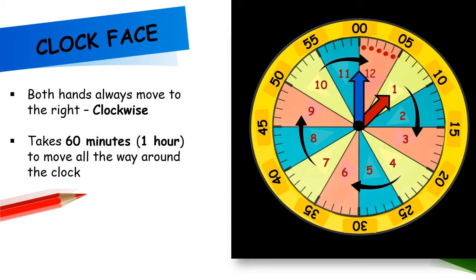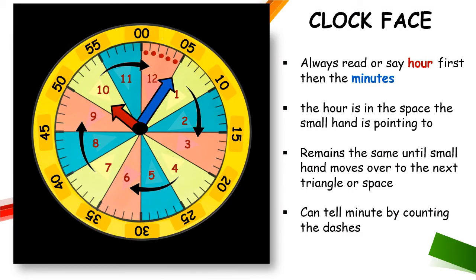Here is the clock face with the hands put back on. Both hands always move to the right — we call this clockwise. It takes 60 minutes, or one hour, for the hands to move all the way around the clock. When telling time, we always read the hour first and then the minutes. The hour is the space that the small hand is pointing to, and it remains the same until the small hand moves over to the next triangle. If you are not sure what the minute is, you can count the dashes. On this clock, the hour hand is in the space occupied by number 10, and the minute hand is pointing to the fifth dash, so we would say that the time is 10:05.